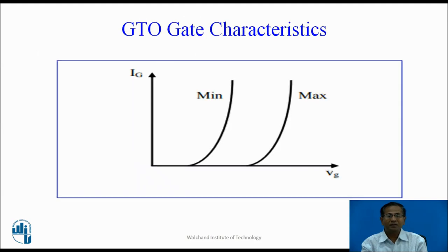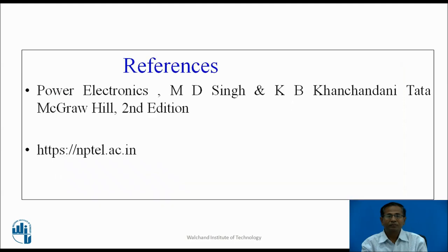GTO gate characteristics. This shows the relation between the gate voltage and gate current. When gate voltage is minimum, gate current is minimum. When gate voltage is maximum, gate current is maximum.